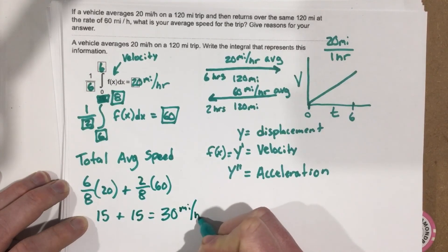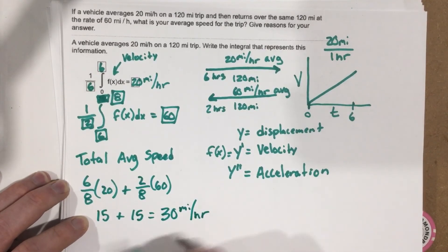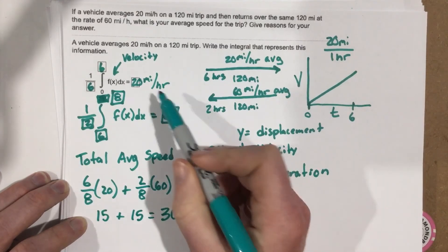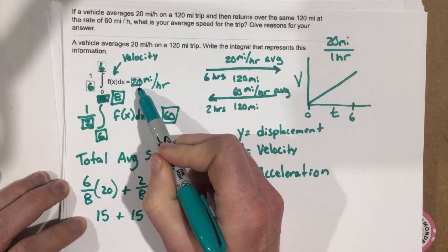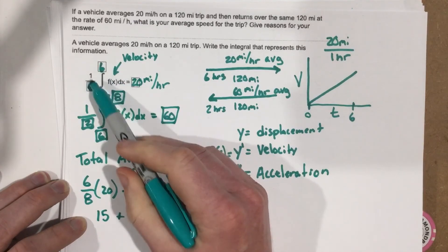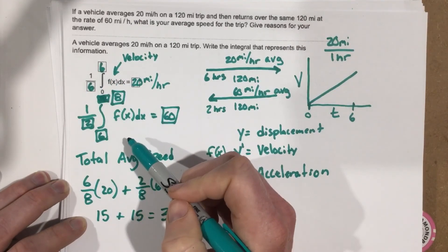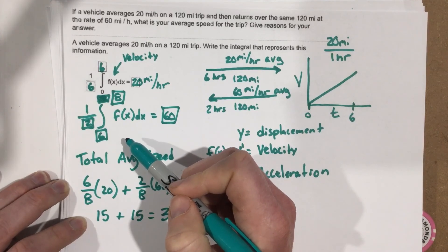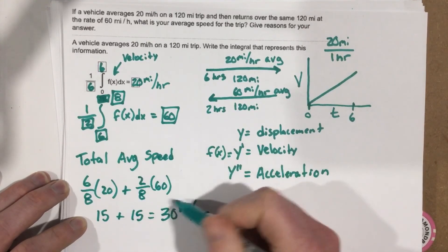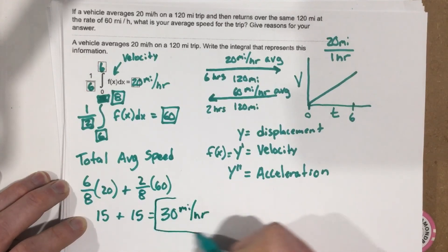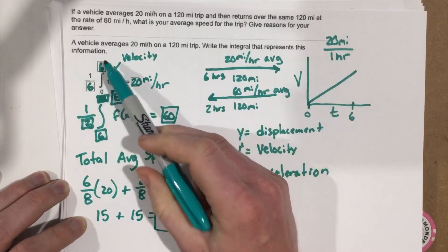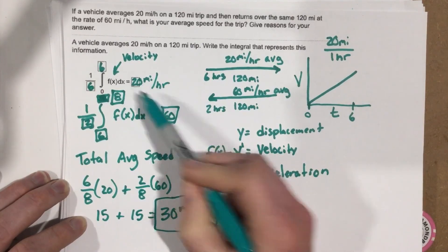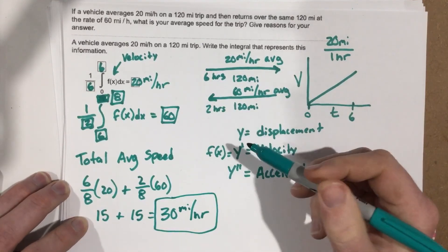The answer is 30 miles per hour. I know this is correct because the average must be closer to 20 miles per hour — we spent six out of eight hours driving at 20 mph, and only two hours at 60 mph. So the weighted average pulls toward 20, and 30 mph confirms that.